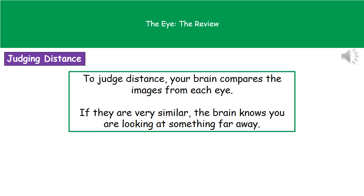In order to judge distance, our brain compares the image it gets from each eye. As you look at something, both eyes receive a slightly different image. If those two images are very similar, the brain knows you're looking at something far away; if they're quite different, the brain interprets the object as being much closer. You can test this by looking at something far away and closing each eye alternately — the image barely changes. Do the same with something close up and the words appear to jump around, telling your brain that object is much closer.